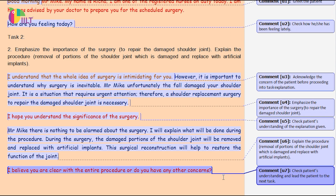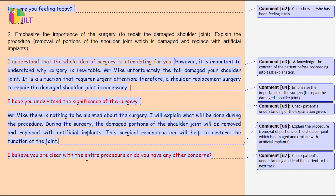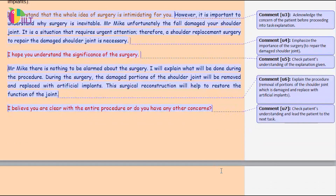So all the points in task number two have been clearly explained. We told Mr. Mike there is nothing to be alarmed about, explained what is going to happen during the procedure, described how the damaged portions of the shoulder will be removed and replaced with artificial implants, and added that the surgical reconstruction will help to restore the function of the joint. After giving such an explanation it is important to check the understanding of the patient. That is how task number two has to be done.